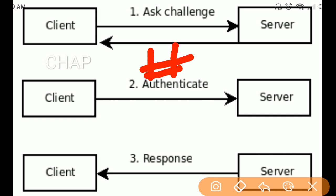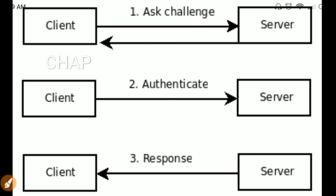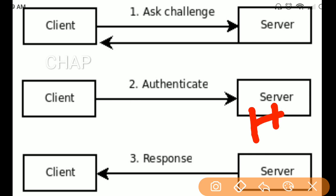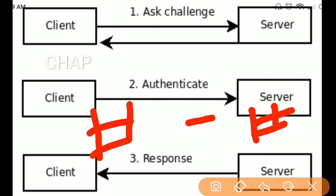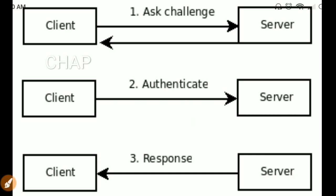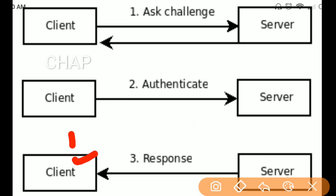The server, at its own end, calculates its own hash value by combining the stored password of the client with that same random string. If these two hash values are the same, then the client is authorized access to the network.